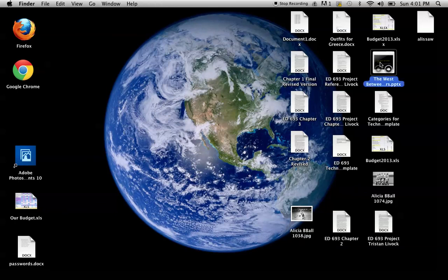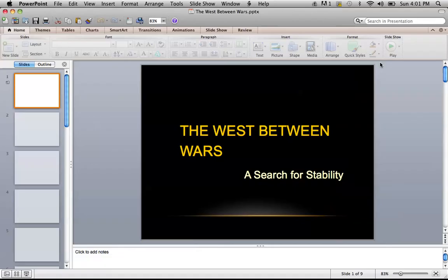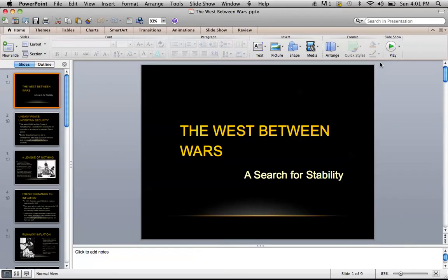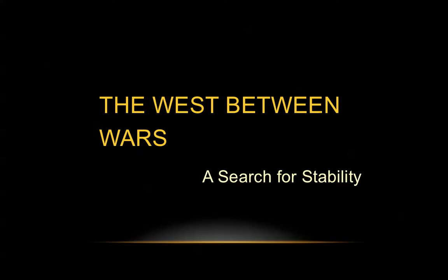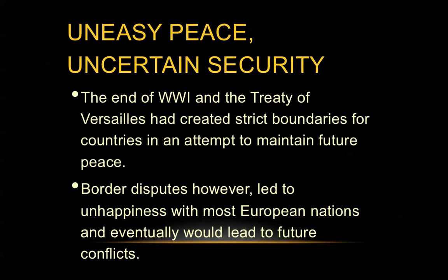Today we're going to talk about the West between wars, that being between World War I and World War II. After the breakup of World War I, Europe was shaped very differently. There became kind of this uneasy peace between countries, with uncertain securities between their borders.